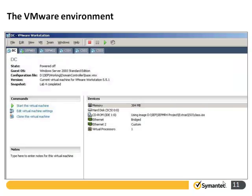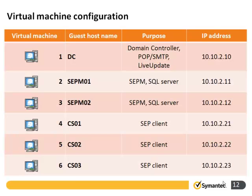Here we can see what the VMware environment will look like once it's all been configured on your lab system. The table here has a detail of the IP address, the guest host name, and also the purpose for each system. This may be useful for referring back to when you're working through the labs.